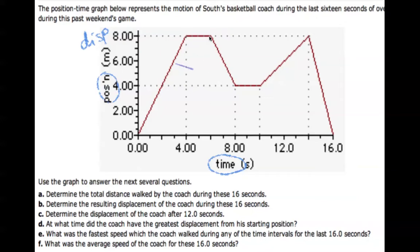In zero to four seconds he moves a distance of eight meters to this point. Then he's standing still since the distance is not changing — always remember we are talking about the origin. Then he comes back to the four-meter position, stands still for a while, then goes back again to eight meters from the origin, and finally comes back to the origin.